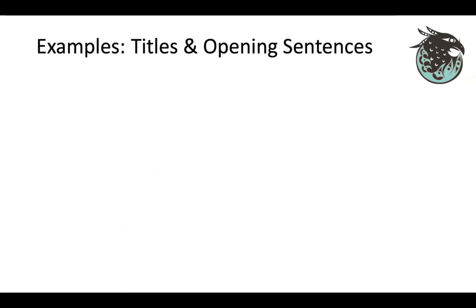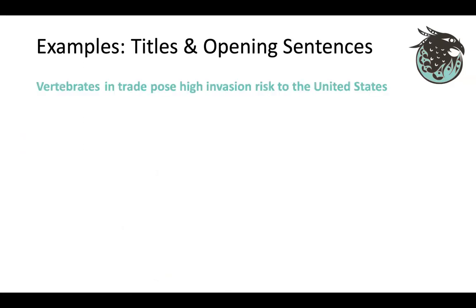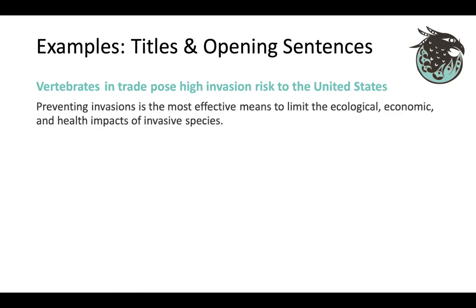I want to give a few examples and then we can start working on your abstracts. First, let's talk about titles and opening sentences, because those really draw you in right away. Here's an example of a really good title: 'Vertebrates in trade pose high invasion risk to the United States.' I feel well-oriented about what this talk is going to be about — I see an important conservation issue. And then paired with its next sentence: 'Preventing invasions is the most effective means to limit the ecological, economic, and health impacts of invasive species.' That's a very compelling pairing.